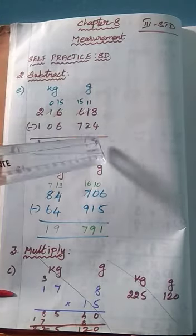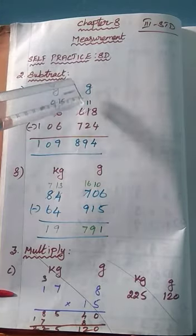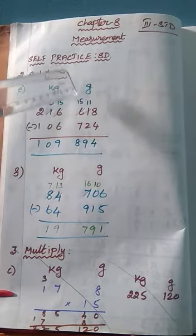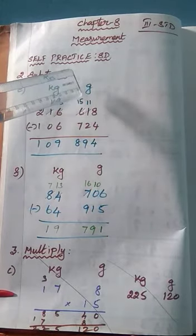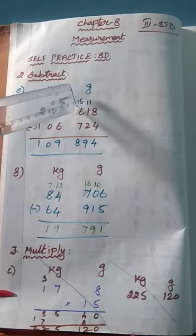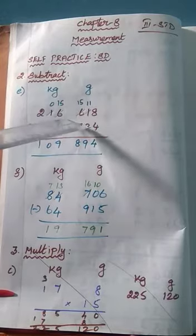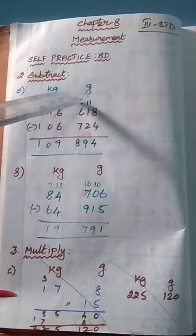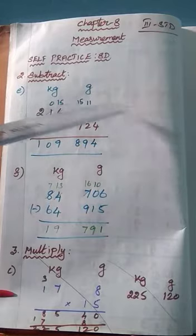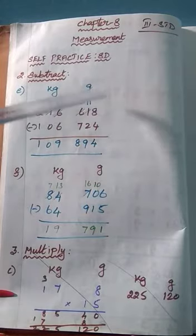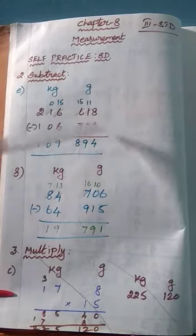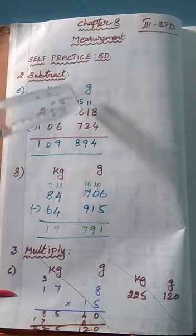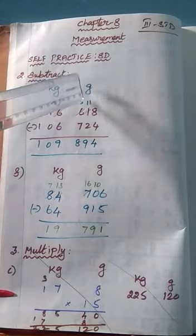8 minus 4 is 4. Then 1 minus 2 — you can't subtract 2 from 1, so you have to borrow from the neighbor number. If you borrow 1 from the neighbor number 6, the 6 becomes 5. Then this one becomes 11. So 11 minus 2 is 9. Then 6, and 5 is there.